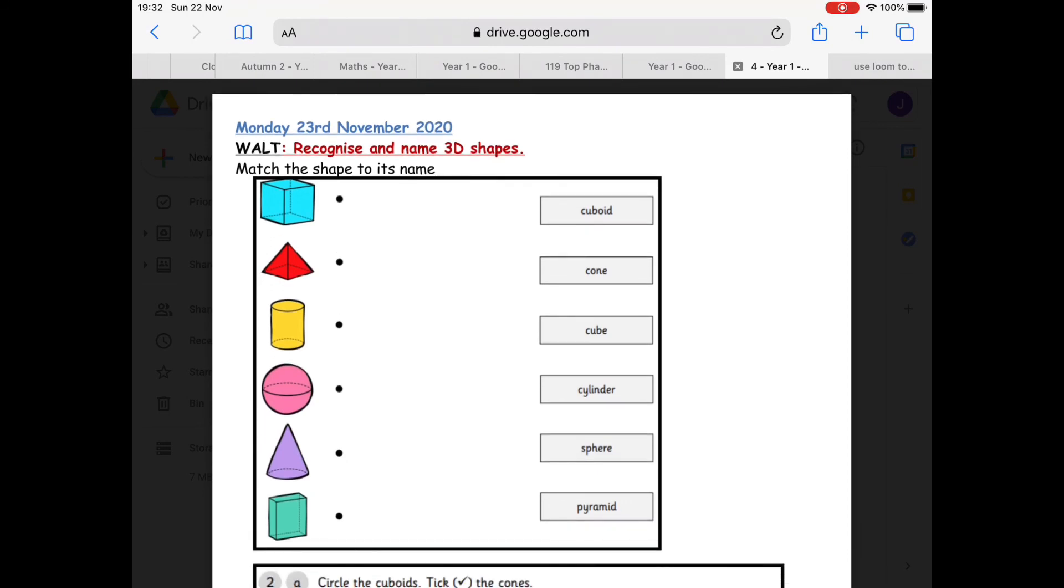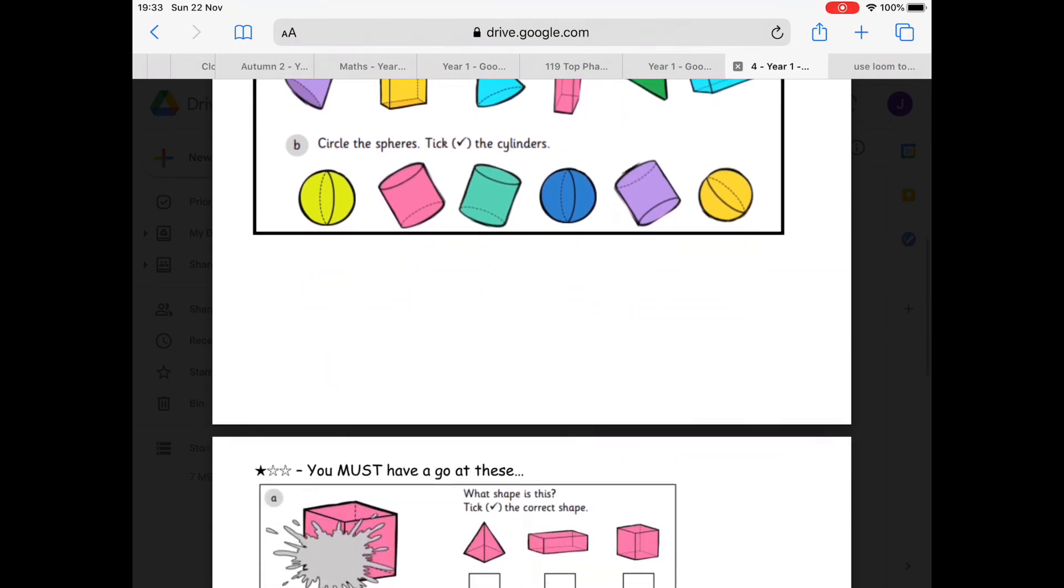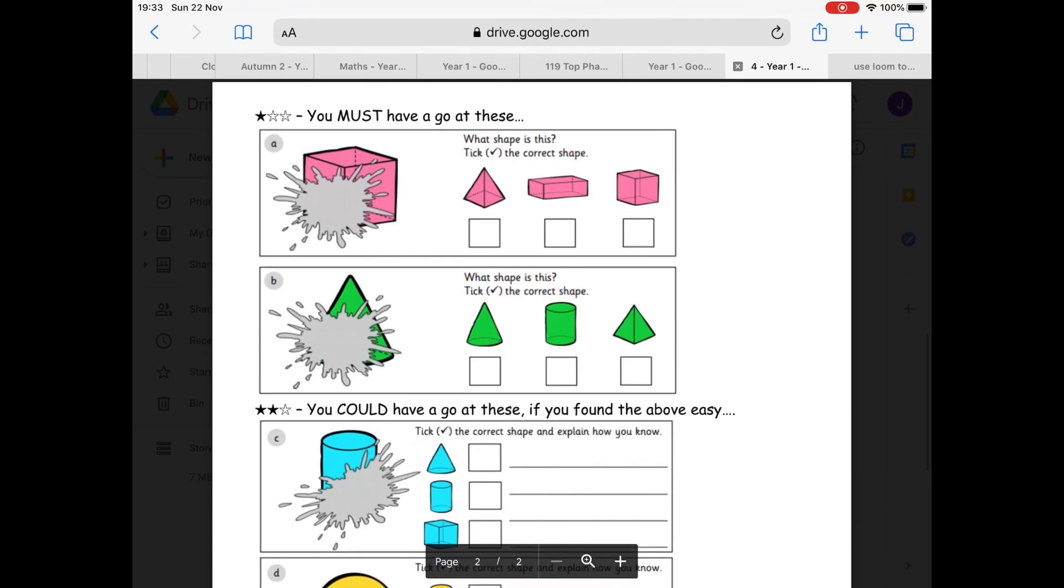Okay, so the first thing I want you to do on the sheet today is to match the shape to its name. Similar to that first slide we had, we've got the shapes down the left-hand side and the names down the right-hand side. You've got to draw a line from the dot next to the shape name. You might need a little bit of help to read some of the words because they are quite tricky words. The top one is cuboid, and we've got cone, cube, cylinder, sphere and pyramid. The second question, we've got a little task.